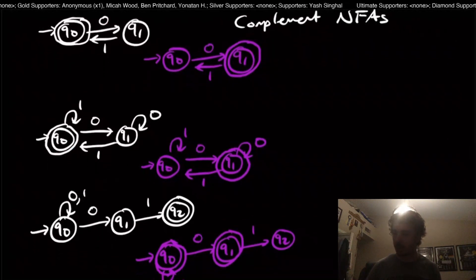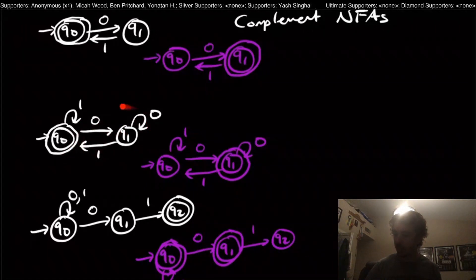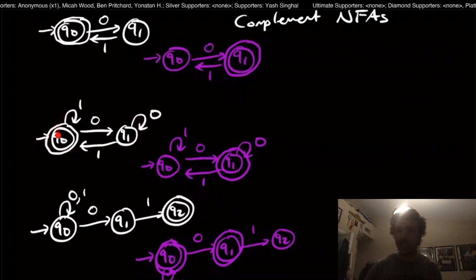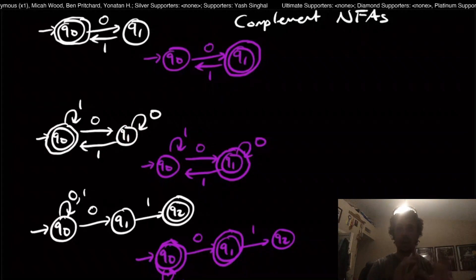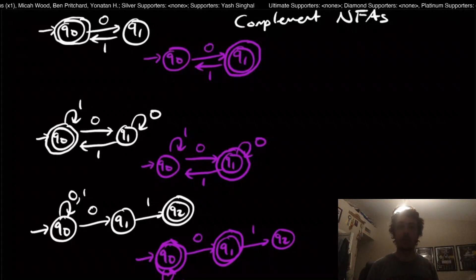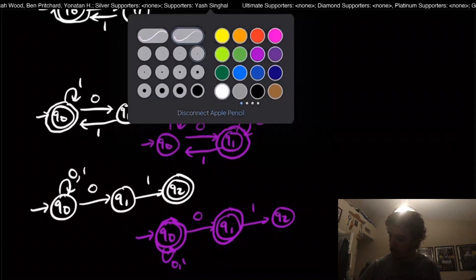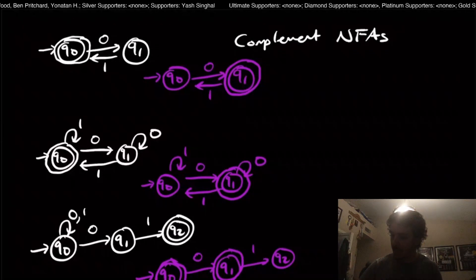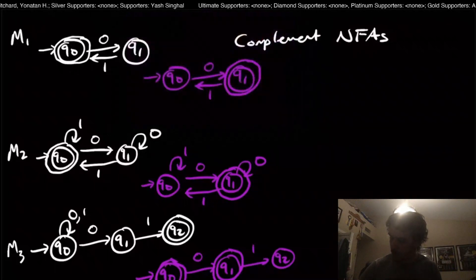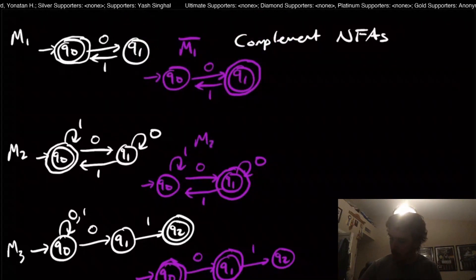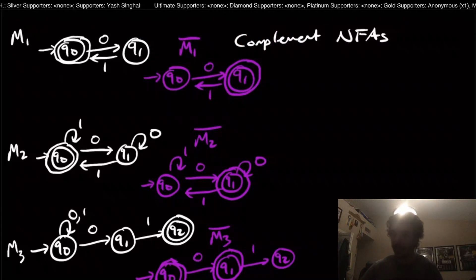I want to answer this one first because it's pretty easy. The thing you should notice here is that the machine itself looks like a DFA already, and we know from before that DFAs, if you apply this complement operation to them, will give you a DFA for the complement language. Let's actually name these machines as M1, M2, M3, and I'm going to name the complement languages M1 bar, M2 bar, M3 bar.